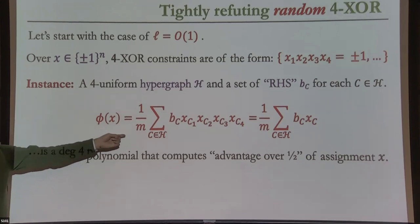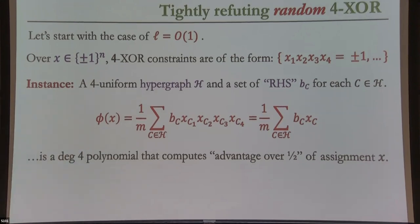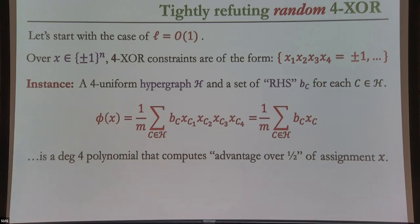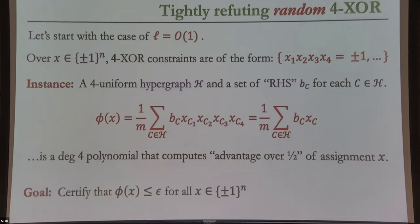I can write down a degree-four homogeneous polynomial phi(X) related to the instance: it simply multiplies each monomial by its right-hand side, then averages. If an assignment X satisfies all constraints, phi(X) evaluates to 1; if it fails all constraints, it evaluates to -1. So phi(X) is between -1 and 1, and you can think of it as computing the advantage over half of an assignment. Our refutation task is equivalent to getting a certificate that phi(X) ≤ epsilon for some tiny epsilon — that's strong refutation.